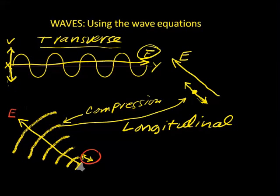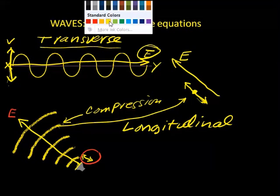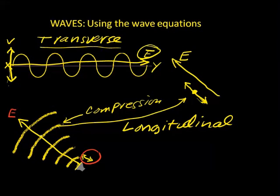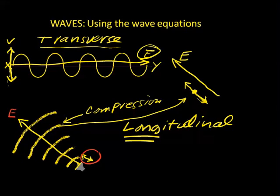That's how you can tell the difference between a transverse wave and a longitudinal wave. In a transverse wave, the vibration transverses or cuts across at a 90 degree angle the direction of energy propagation. And in a longitudinal wave, the vibration is along the same path as the energy — in other words, along the same path as the direction of propagation. That's how you can tell the difference between transverse waves and longitudinal waves.